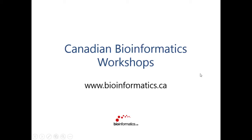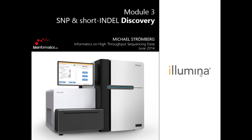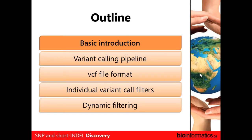We are going to get started now with module 3. Before lunch, we learned about alignment algorithms. The second part of that — normally for it to be really useful — is learning how to call variants. The talk is broken down into five sections: what we're trying to accomplish with variant calling, what goes into a variant calling pipeline, the standardized file format called the BCF file format, filtering variant calls, and dynamic filtering.